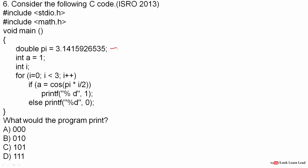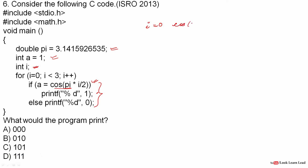Next question: consider the following C code. We have a double variable pi, an integer a equal to 1, and a loop counter i running from 0 to 3. Whenever the condition is true, 1 is printed; when false, 0 is printed. For i equal to 0, we compute cos(pi * 0 / 2) which is cos(0) equals 1, which equals a, so 1 is printed.